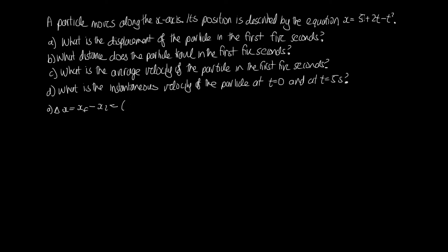When we substitute in, we get: five plus two times five minus five squared for the final position, minus the initial position at t equals zero. When t equals zero, the 2t and t squared terms are both zero, so the initial position is just five. The fives cancel and we end up with ten minus twenty-five, which gives a displacement of minus fifteen meters.